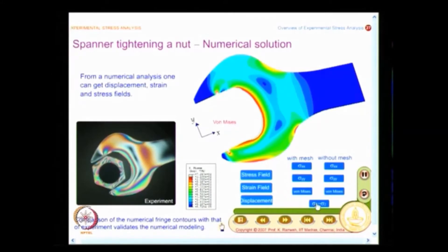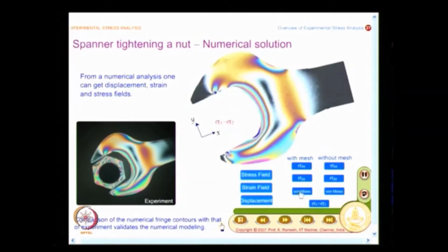And what was done was, we have developed an in house software, what it will do is, it will evaluate sigma 1 minus sigma 2 and also mimic the colors that you get in an experiment and this is plotted. And an approach like this helps you to quickly come to an understanding that you have very good comparison between what you observe in the experiment and what you observe in the numerical method.